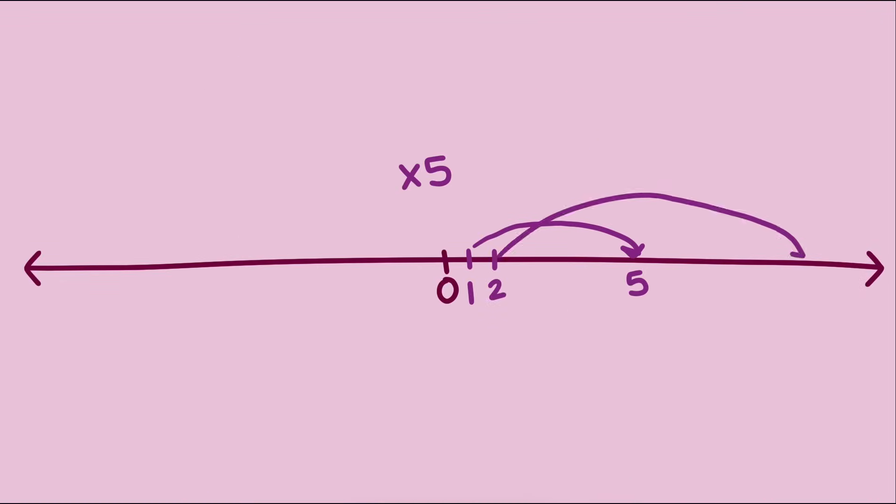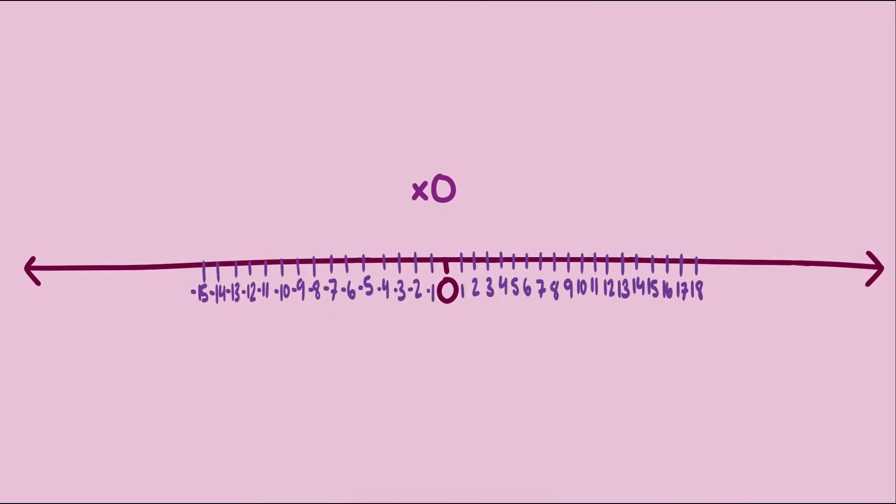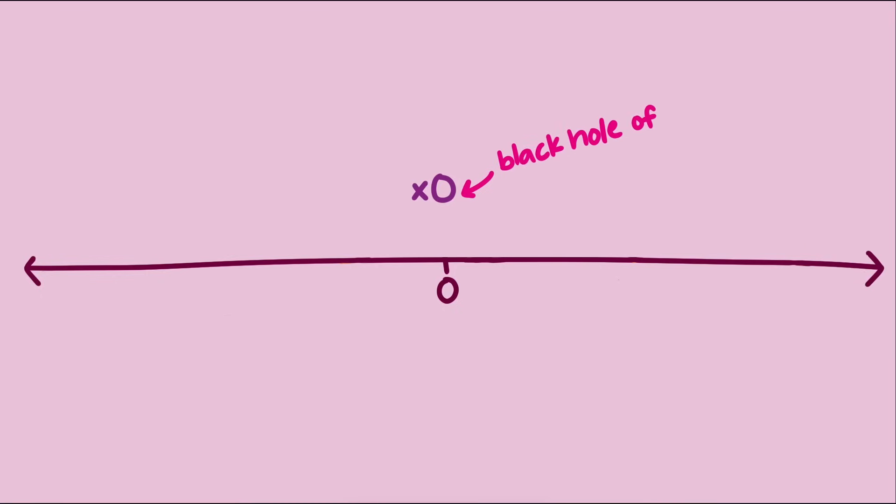How's that possible? Well, let's compare it to real numbers. Multiplying by five stretches the number line. One becomes five, two becomes ten, negative three becomes negative fifteen. To undo that, we just shrink everything by one-fifth. But multiplying by zero collapses the entire number line down to a single point. Zero. That's irreversible, because you lose all information about where the numbers first came from.